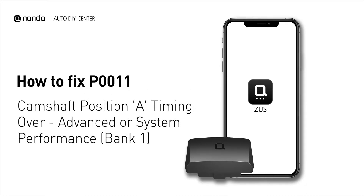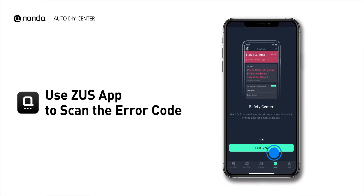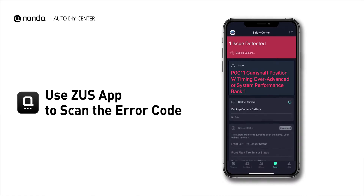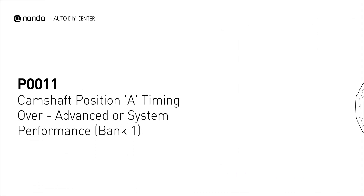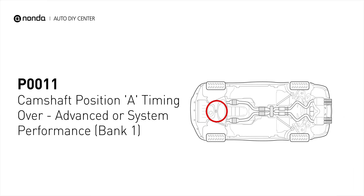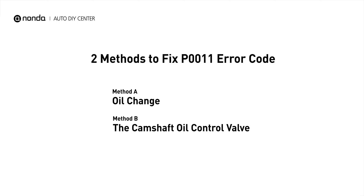If you are getting a P0011 error code, this video is going to show you two practical solutions to fix the error code at home. Use the Zeus app to scan your vehicle and see the error code P0011. It indicates the engine control module has determined that the bank one intake camshaft is more advanced than what the engine control module has commanded it to be. Here are two simple DIY methods you can try to solve this problem.